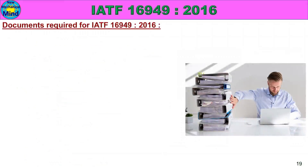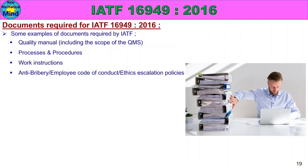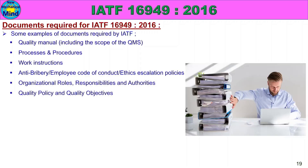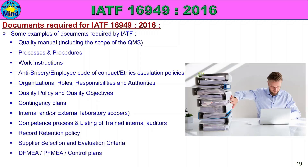Documents required for IATF 16949-2016 include: quality manual including the scope of the QMS, processes and procedures, work instructions, anti-bribery and employee code of conduct and ethics escalation policies, organizational roles and responsibilities and authorities, quality policy and quality objectives, contingency plans, internal and/or external laboratory scopes, competence process and listing of trained internal auditors, record retention policy, supplier selection and evaluation criteria, DFMEA, PFMEA and control plans, and maintenance procedures.